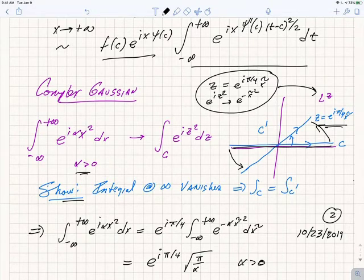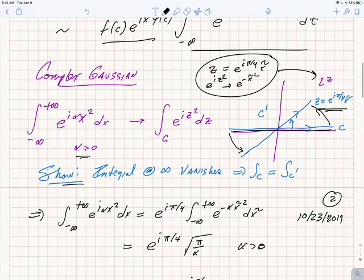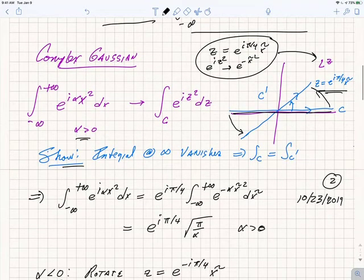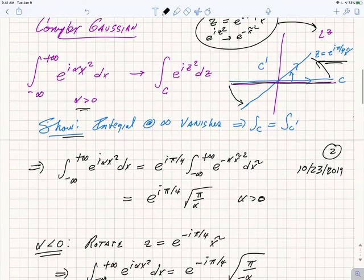You don't even need Jordan's Lemma for this one. You can show this because the controlling factor as you go into the complex plane vanishes so quickly with r, like e^(-r²). That's essentially the reason why you're allowed to rotate the contour.